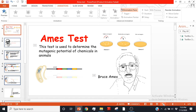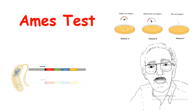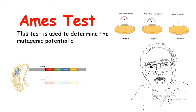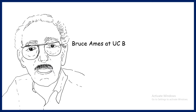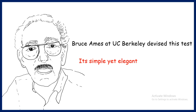Hello everyone. In this video we'll look at the Ames test. The Ames test is a test used to determine the mutagenic potential of an unknown chemical, and it is still used today. It was developed by Bruce Ames at UC Berkeley. It is a very simple yet elegant technique that is still used today.